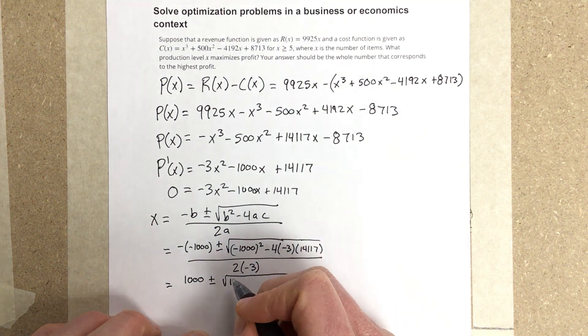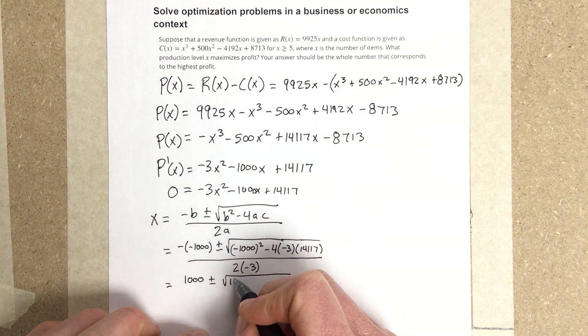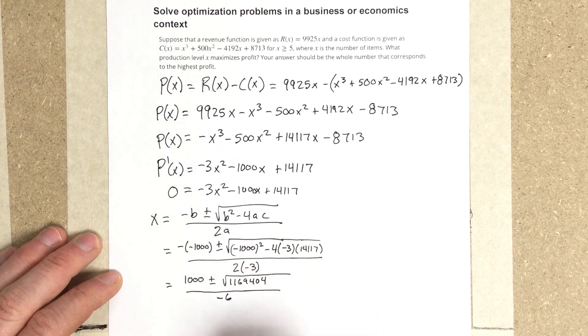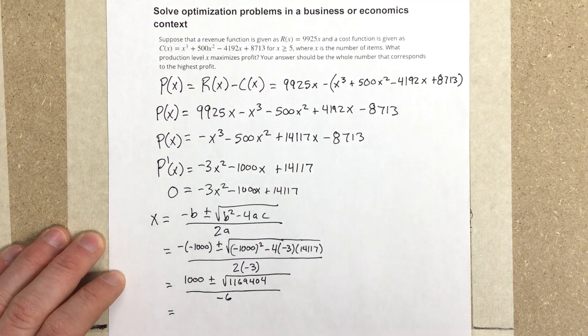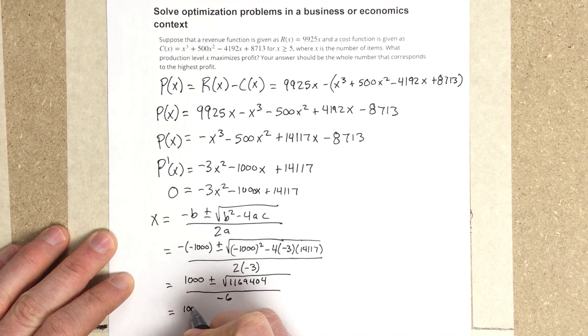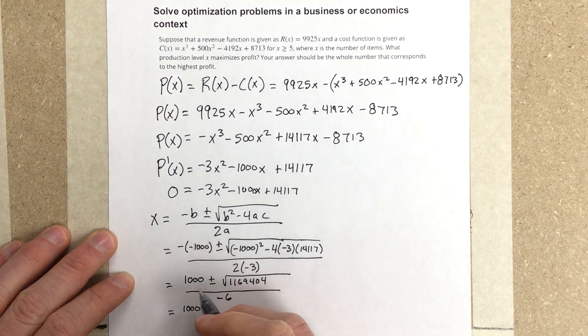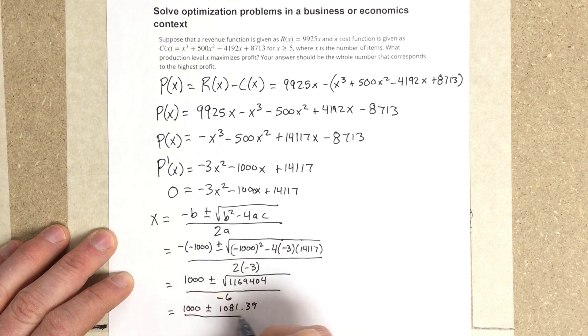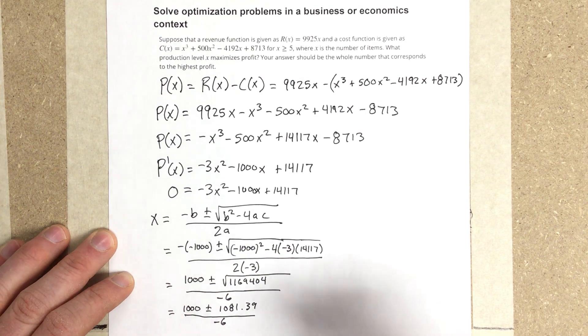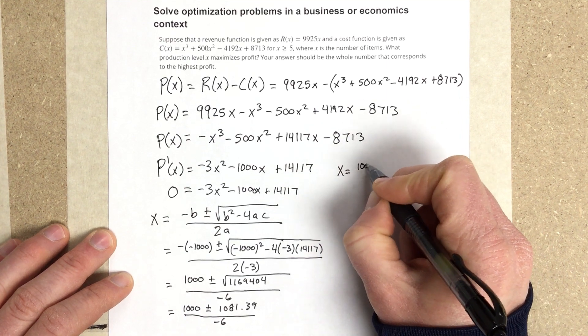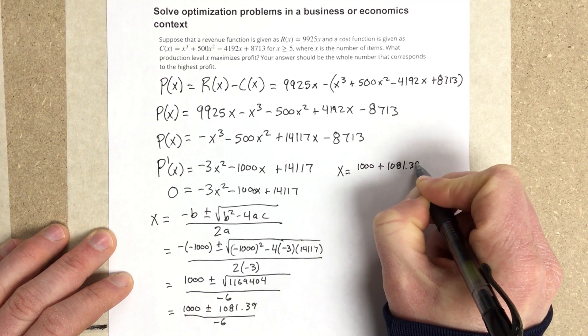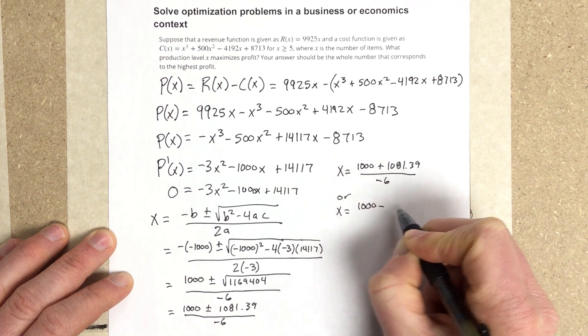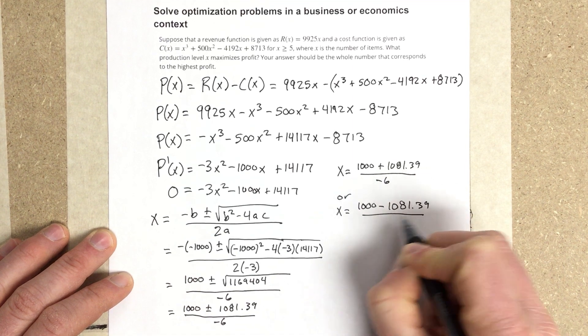And we get 1,000. So this would actually be √1,169,404 all over -6, which then gives you 1,000 ± 1,081.39 over -6. So I'm going to write up here that x = (1,000 + 1,081.39) / -6, or x = (1,000 - 1,081.39) / -6.